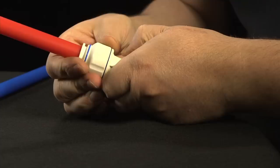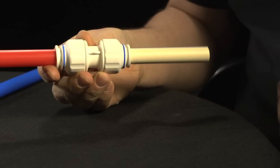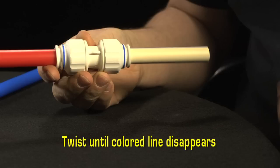To lock fitting, hand twist fitting until colored line is no longer visible. This confirms a proper, secure fit. Do not use any type of wrench to tighten the nuts.